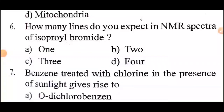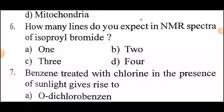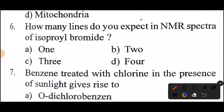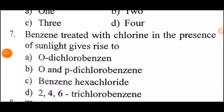Question: how many lines do you expect in the NMR spectrum of isopropyl bromide? Answer: option B, 2.